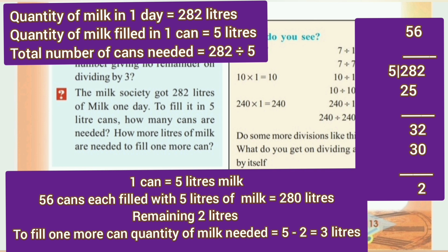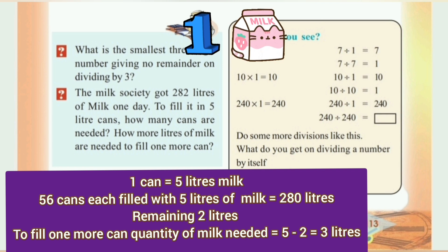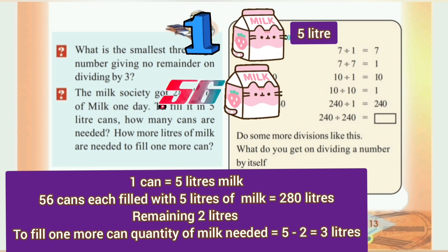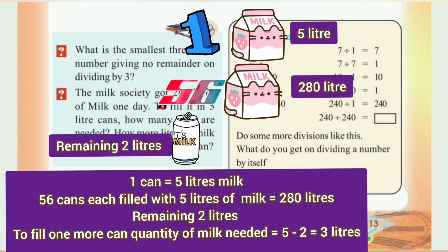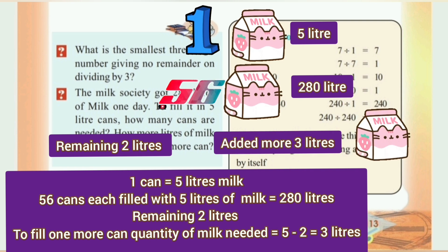Therefore, the quotient is 56 and the remainder is 2. So 56 cans filled with 5 litres of milk contain 280 litres. The remaining milk is 2 litres. How many litres of milk are needed to fill one more can? The quantity of milk needed is 5 minus 2, that is 3 litres. One can holds 5 litres, and 56 cans hold 280 litres, with 2 litres remaining, so 3 more litres are needed.